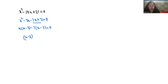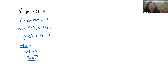So these are the factors: x minus 3 and x minus 7 equals 0. To find the solutions: from x minus 3 equals 0, x equals 3. From x minus 7 equals 0, x equals 7.